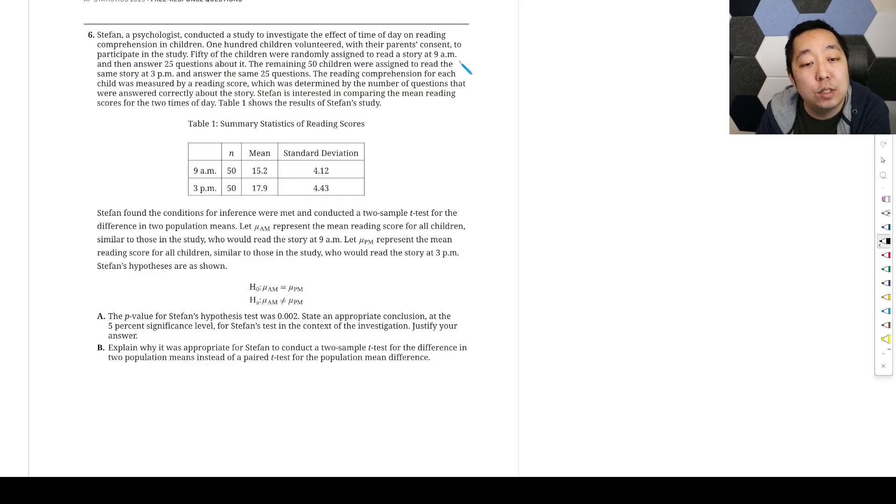50 of the children were randomly assigned to read a story at 9 a.m. and answered 25 questions about it. Okay, so they volunteered. The remaining 50 children were assigned to read the same story at 3 p.m. and answered the same 25 questions. So we randomly split them up.